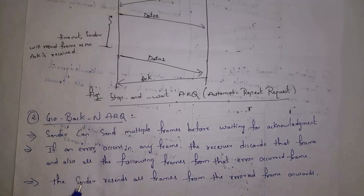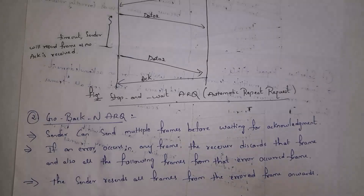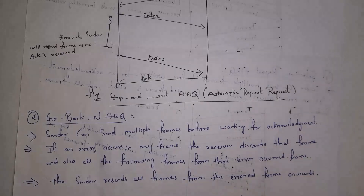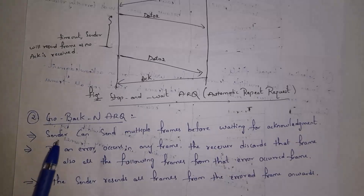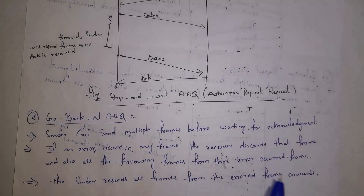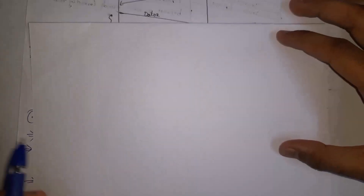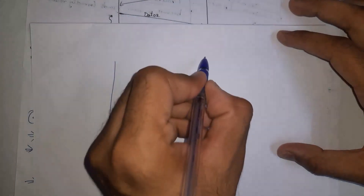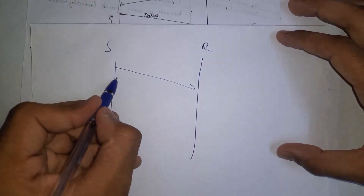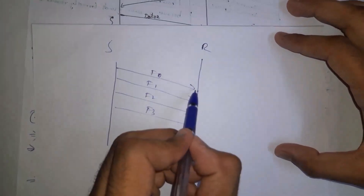Next I will explain what is Go-Back-N ARQ. In stop and wait ARQ, sender will send only one data frame at a time and only after receiving a reply from receiver will sender send the next frame. But in Go-Back-N ARQ, sender can send multiple frames at a time. If any error occurs in any frame, receiver will discard that frame as well as all the following frames from the error-occurred frame.